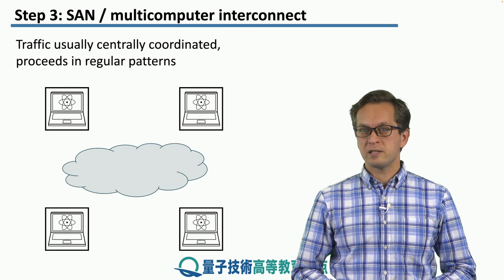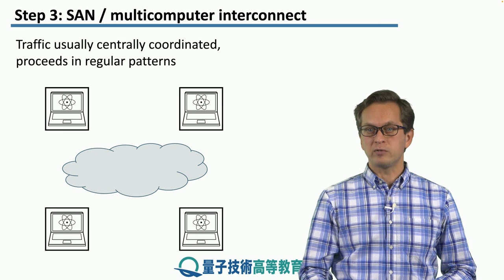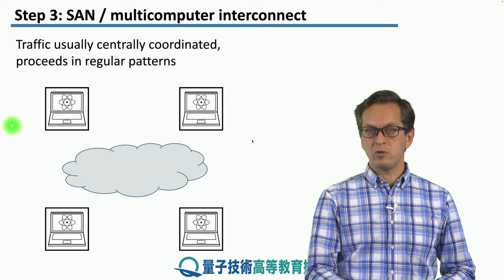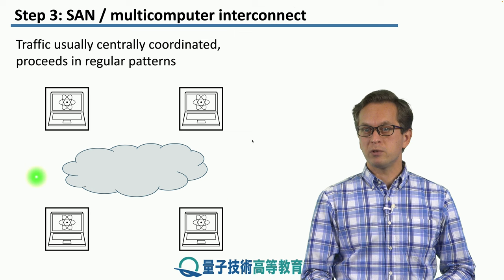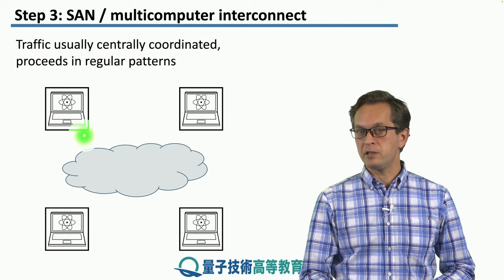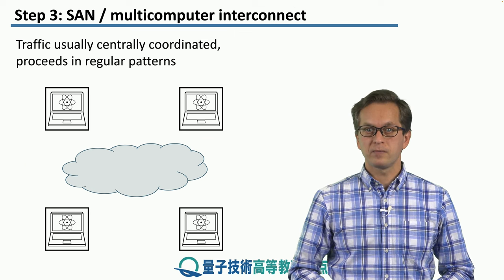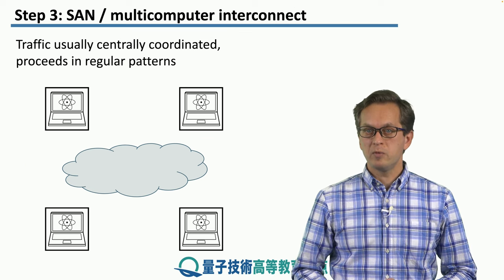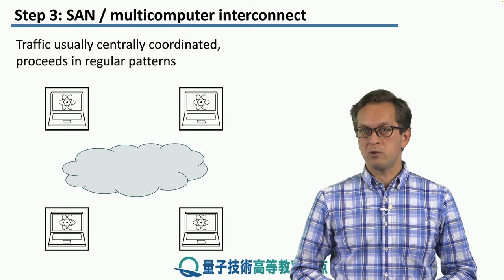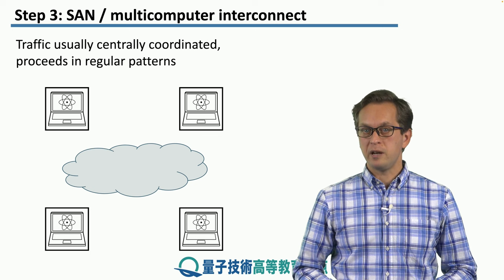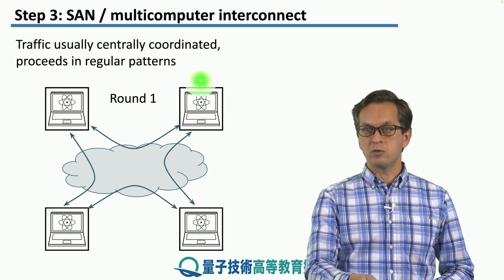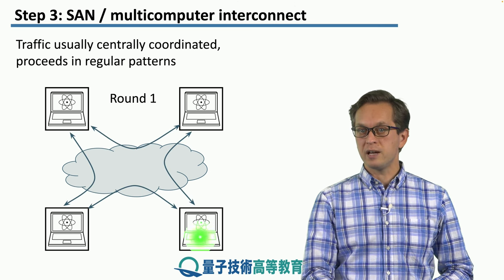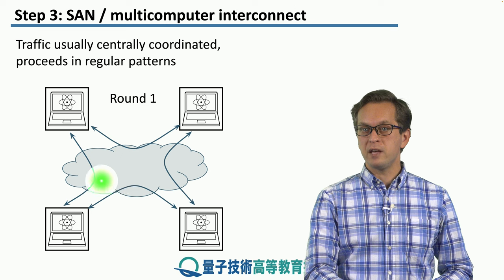Here is a simple example. Let's say we've got four computational nodes, and they wish to talk to each other through some interconnect. Normally the traffic is centrally coordinated and proceeds in a regular pattern. In the first round, the computational nodes perform the computation they were assigned, and then they talk to each other.